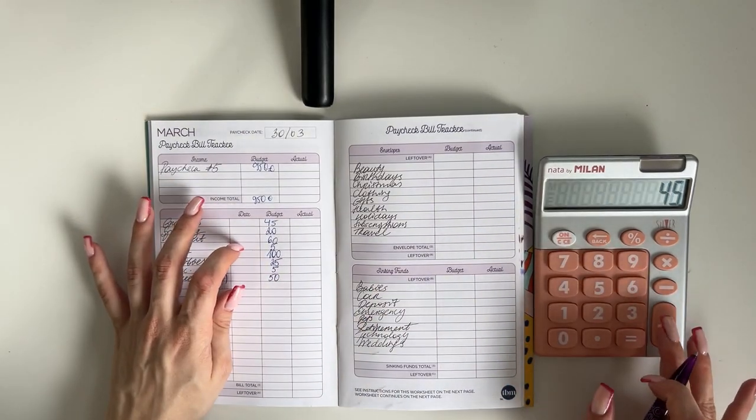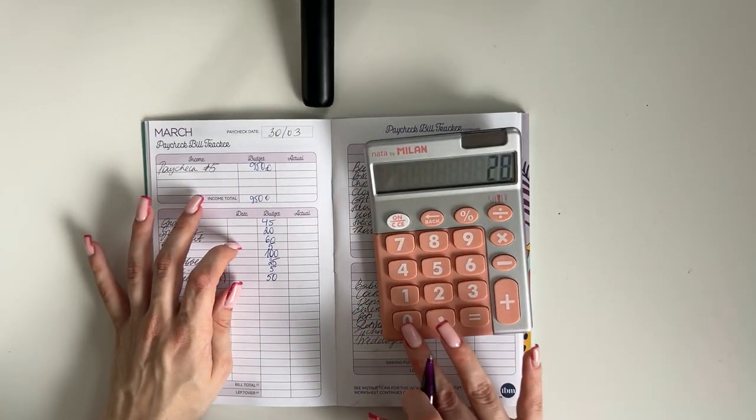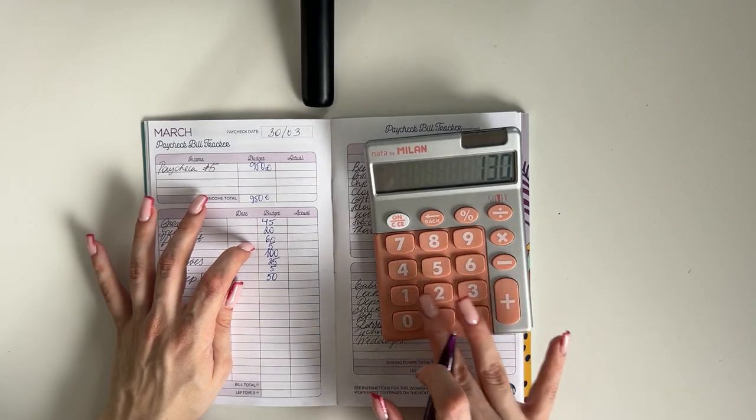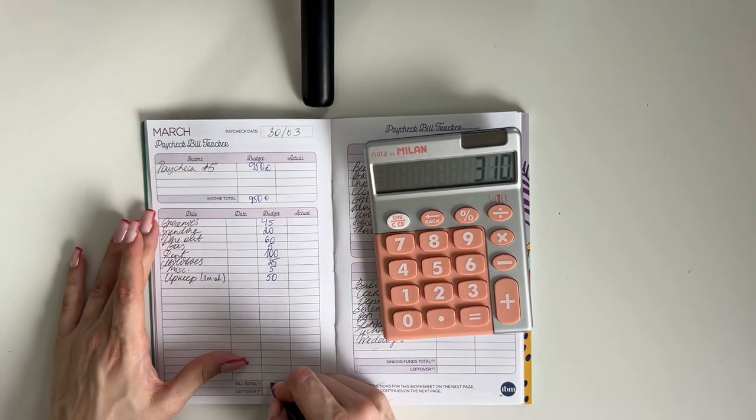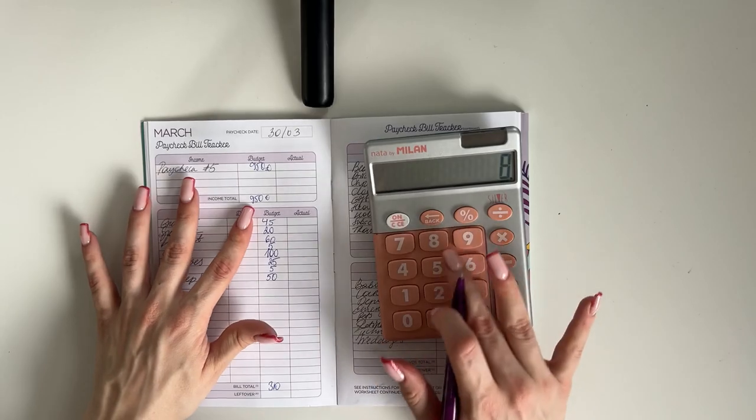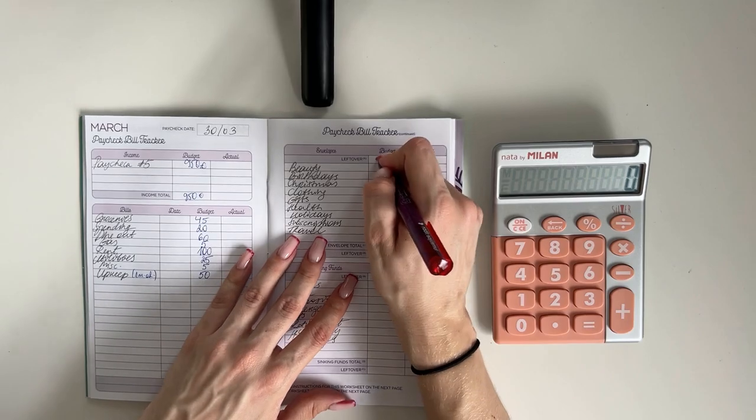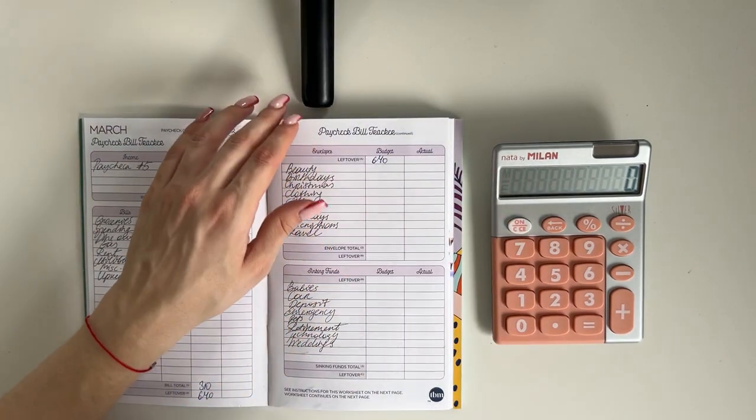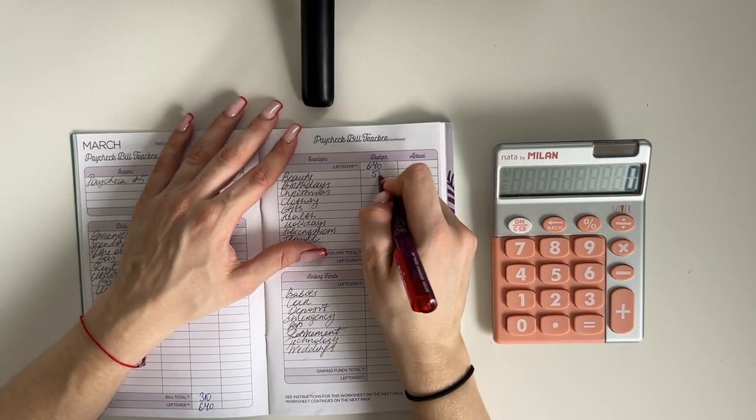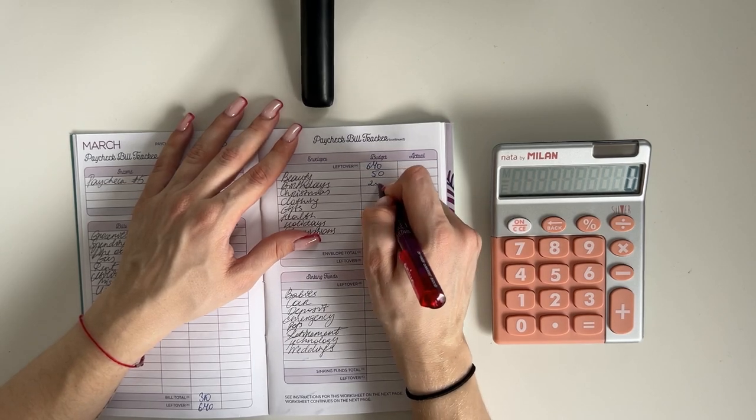And in total for bills and cash envelopes, we are stuffing 310 euros. So 950 minus 310, 640 euros. We're bringing that up here for short-term sinking funds.